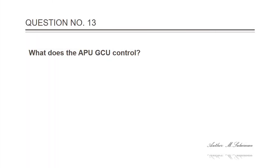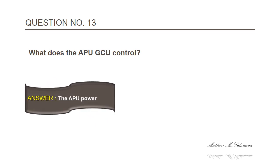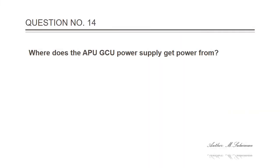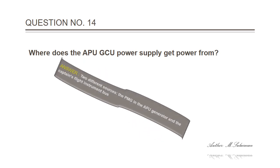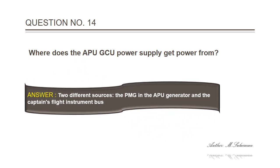Question 13: What does the APU-GCU control? Answer: The APU power. Question 14: Where does the APU-GCU power supply get power from? Answer: Two different sources — the PMG in the APU generator and the captain's flight instrument bus.